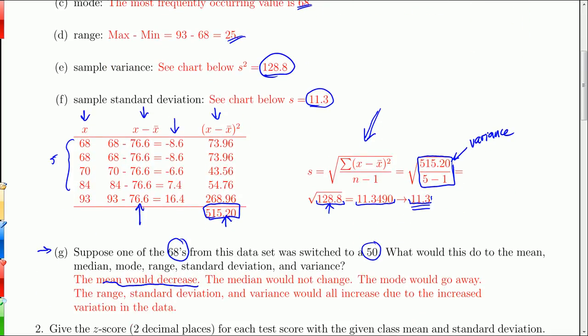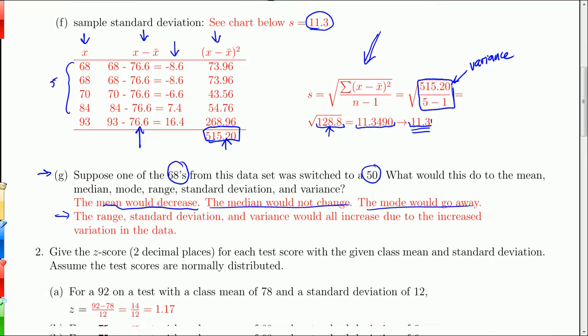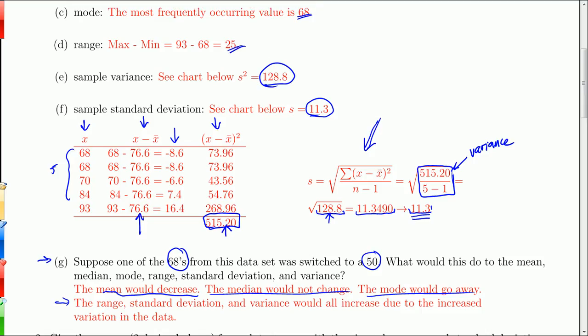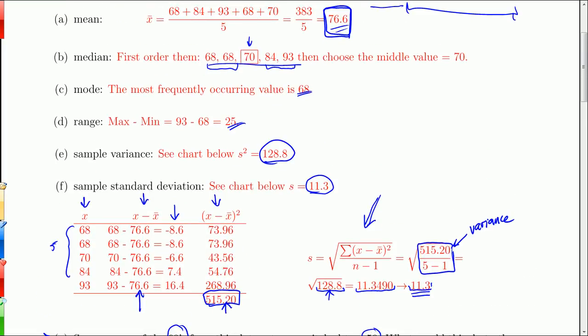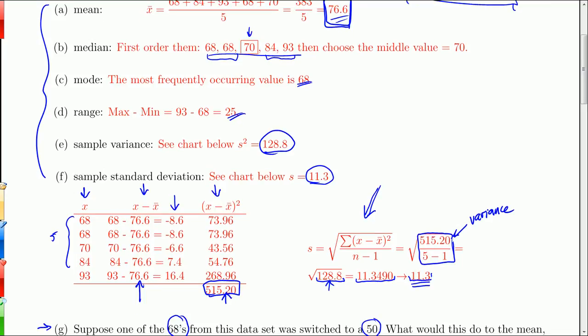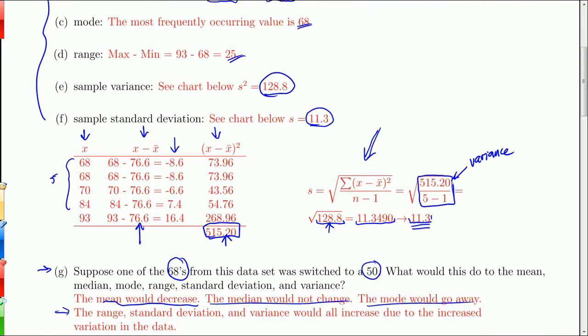So the range got bigger, and the standard deviation and the variance will both increase as well. I don't know by how much, but I'm certain that they will increase. So that's sort of how I came up with all these answers down here. The mean would decrease. The median would not change. The mode would go away, and all measures of variation that we have, range, standard deviation, variance, would increase. All right. So that's getting this big list of descriptive statistics and what happens whenever you change some of the numbers around.